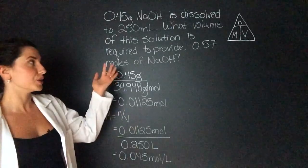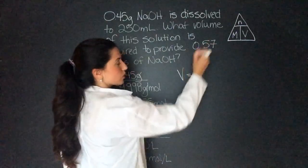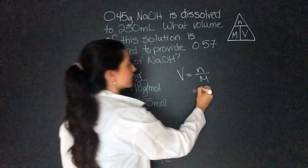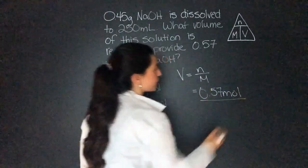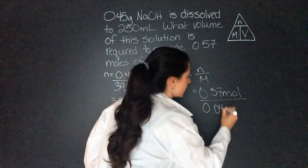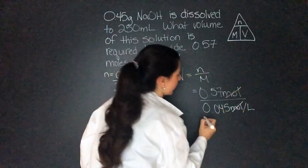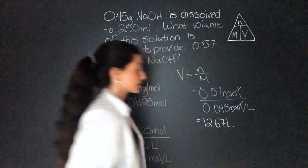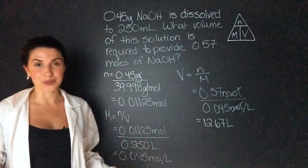Now we can find the new volume that's needed to provide these new moles. So volume equals moles over molarity, which equals 0.57 divided by the molarity we found 0.045 moles per liter. The moles will cancel out and we are left with 12.67 liters. Wow. That's a lot of solution.